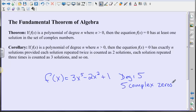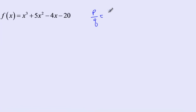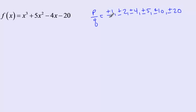Here's our first polynomial: f(x) = x³ + 5x² - 4x - 20. The first thing we do is list our p over q's. p is the factors of 20, so plus or minus 1, 2, 4, 5, 10, and 20. The bottom is the factors of our leading coefficient, which is 1, so just plus or minus 1. Because everything is over 1 anyway, these are our possible rational zeros.